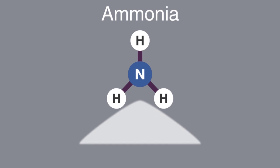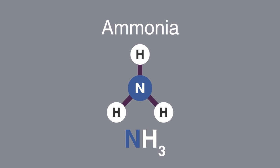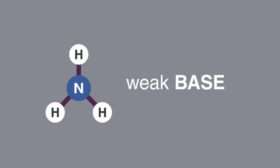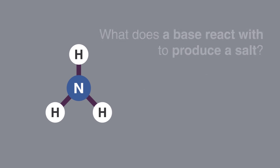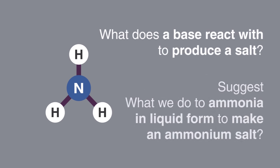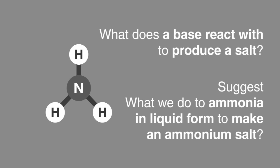To understand something we need to know how it's created, so let's start there. You might have already guessed that making an ammonium salt starts with ammonia, NH3. Ammonia is a base — a weak base, yes — but a base nonetheless. So here's the first question: can you remember what a base reacts with to produce a salt, and suggest what we do to ammonia in liquid form to make an ammonium salt? Pause the video and have a think.